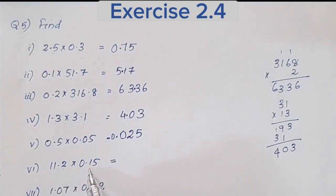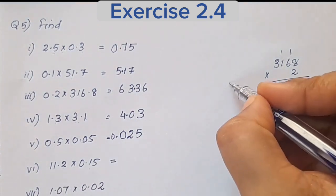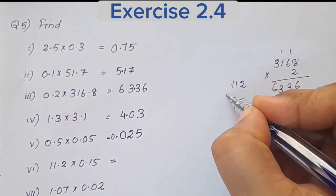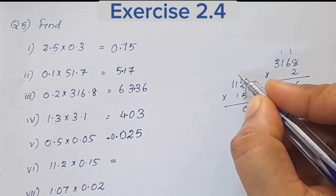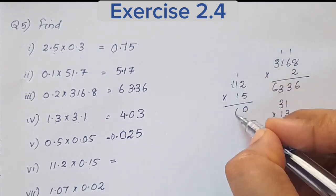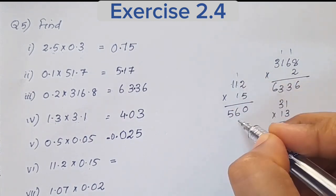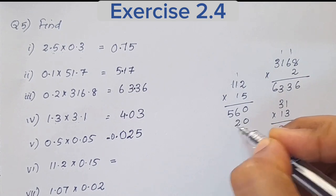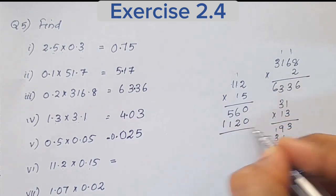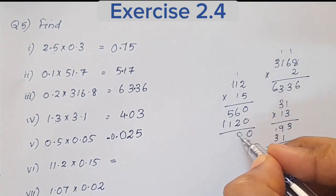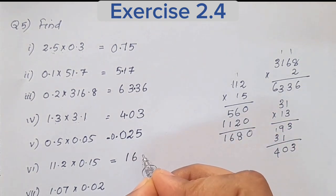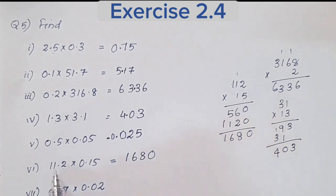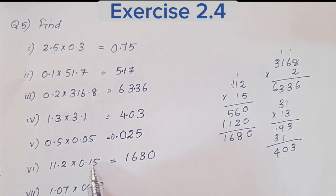11.2 × 0.15: remove the decimal points and calculate 112 × 15. 5×2 is 10, carry 1; 5×1 is 5 plus 1 is 6; 5×1 is 5. Then 1×112: giving 1, 1, 2. Combined result is 1680.